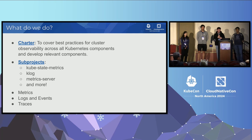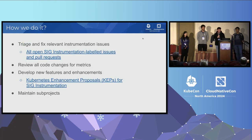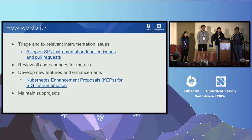We are also responsible for observability signals. How do we do that today? We have some triage sessions where we go through all the issues and pull requests labeled for our SIG in the upstream community. We review code changes for metrics to make sure they align with our best practices, and we develop new features and enhancements to improve that whole ecosystem.